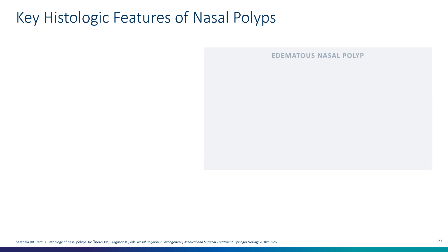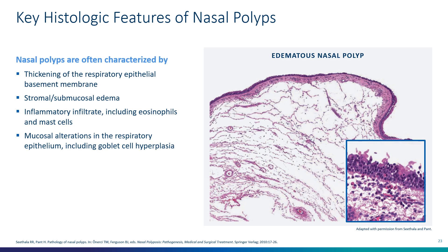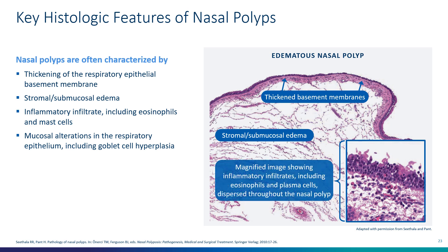The key histologic features in nasal polyps are thickened basement membranes, stromal submucosal edema, and scarring. In the magnified call-out, you can see the tremendous amount of inflammatory infiltrates, including eosinophils and plasma cells, dispersed throughout the nasal polyp. The takeaway: ongoing inflammation, mucosal edema, and matrix deposition are the key histologic features of the nasal polyp.